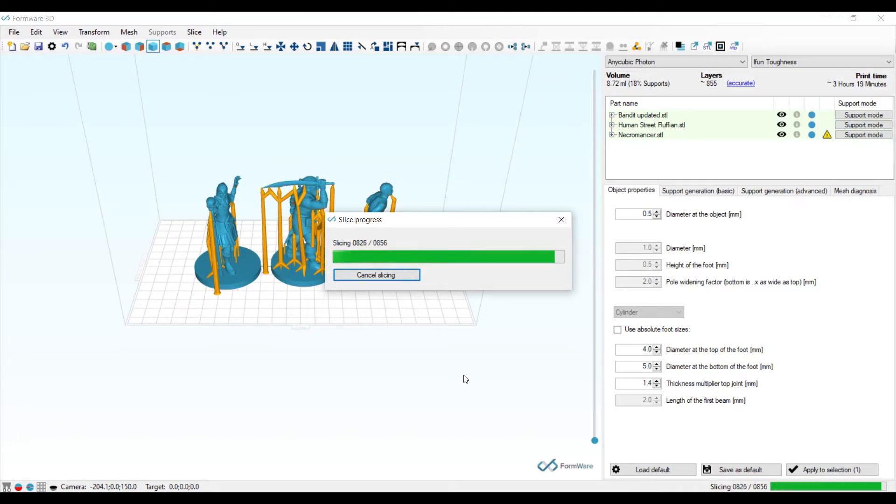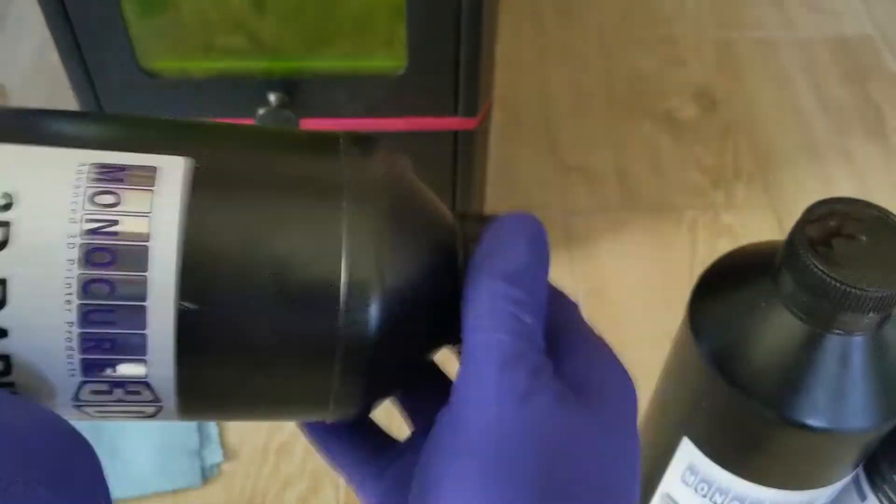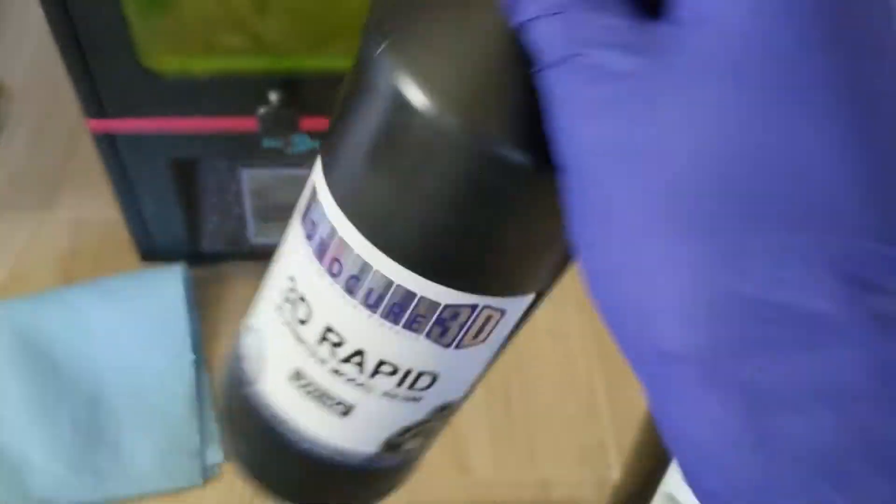Once our files are sliced, we're ready to print, so we'll go ahead and shake up our resin. We're going to start with the Rapid, and then I will also add a 50-50 Rapid and Flex mixture for the second set, and then the third set will be just the toughness.